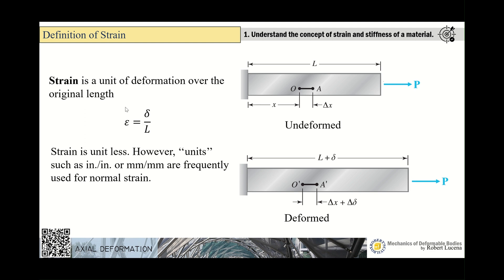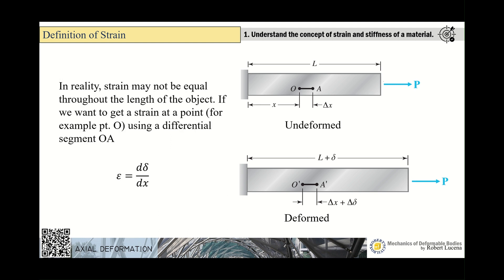Strain can be expressed in percentage but is usually expressed as a decimal. It represents how much deformation has occurred relative to the original length. In reality, strain may not be equal throughout the length because some materials are non-homogeneous or non-isotropic, but in this lecture we assume an isotropic and homogeneous material.